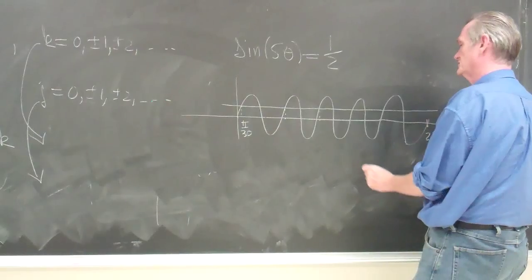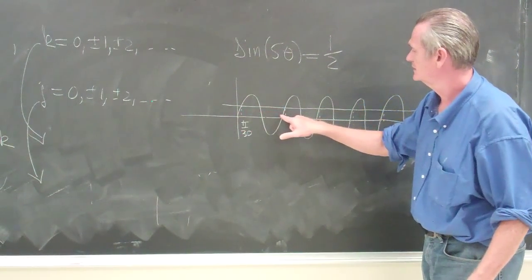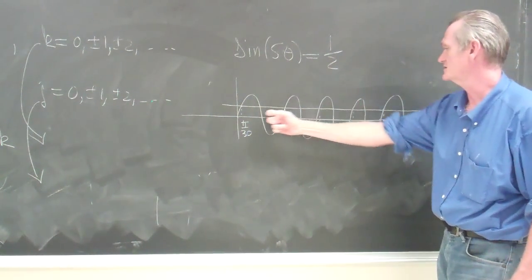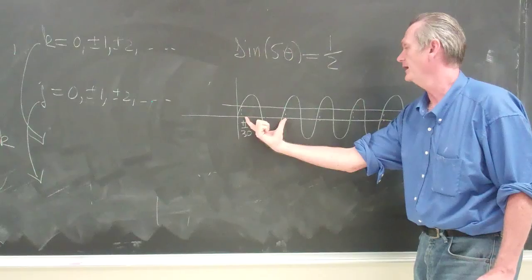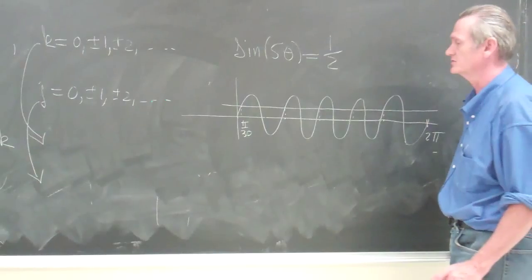If I add in another 2 fifths of pi, I get to here, and so forth. So these points here are offset along this axis by a fifth of a rotation, and it's a fifth of a rotation because we make 5 full cycles.